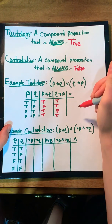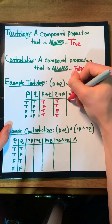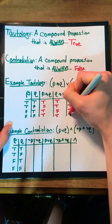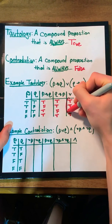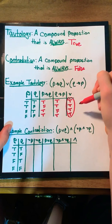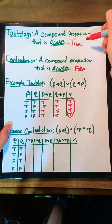When we or these statements together, we get true, true, true, true. And thus, we notice that we got all trues, which matches our definition of a tautology.